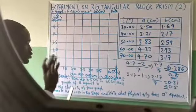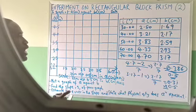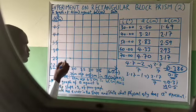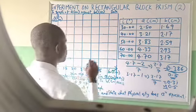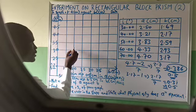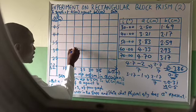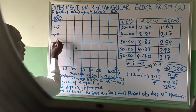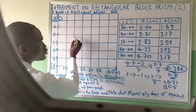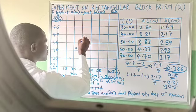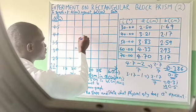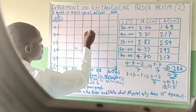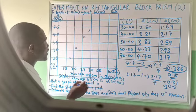Now what you do is plot your points: 2.5 against 1.69 — plot that point here. Then 3.2 against 2.17 — plot that point. Then 3.53 against 2.59 — that should be around here. Then 4.53 against 3.17.